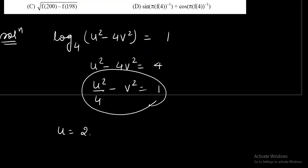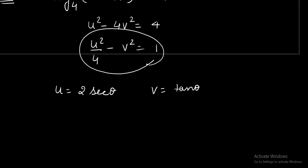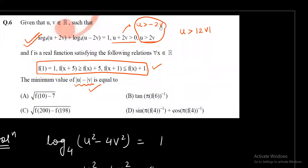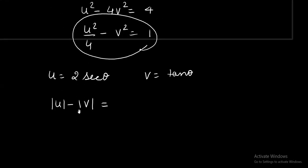Since it resembles a hyperbola, I am going to take the parametric form. I can assume u = 2 sec θ and v = tan θ. So u and v are both converted to the same variable θ, where θ can be any real number. Now since u > |2v|, it is clear that |u| > |v|, so the answer must be positive — we need the least positive value.